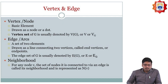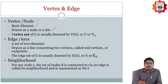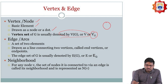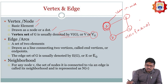So what is a vertex and what is an edge? A vertex — another name we call it as a node — should be the basic element and they should be drawn as a node or dot. The vertex set is normally denoted by V(G), or V, and we also call that V sub G. The vertex set can be written as V(G) = {a, b, c, d}, or simply V = {a, b, c, d}.